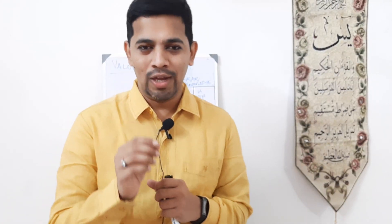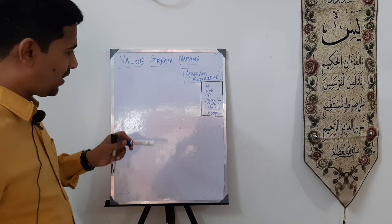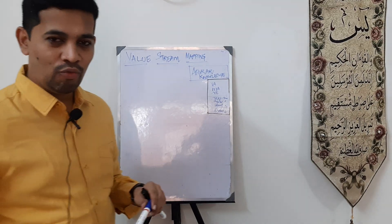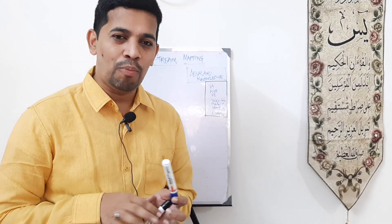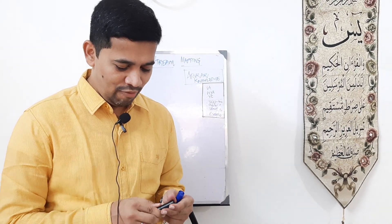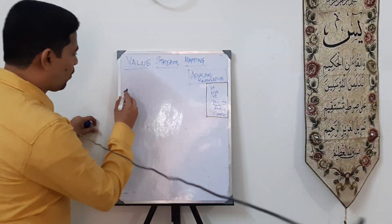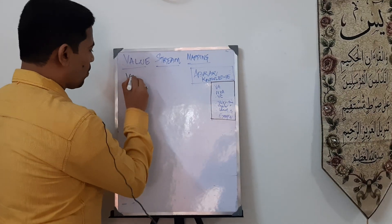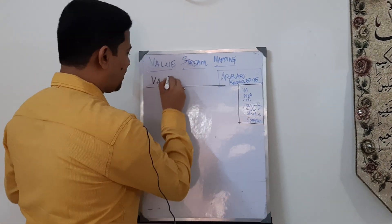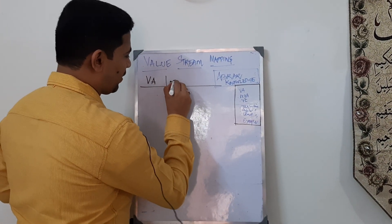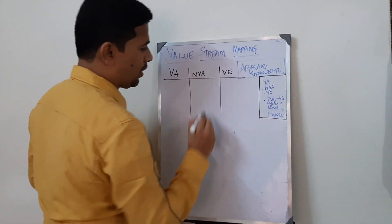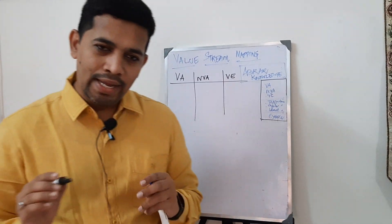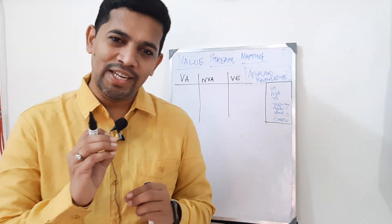Another word for VSM is value stream mapping. In value stream mapping, you have three things you need to know. We need to know about the value. In value stream mapping, we need to know what is something called VA, what is something called non-value added, and in the middle, something called value enabled.